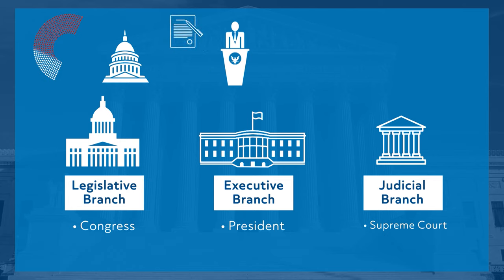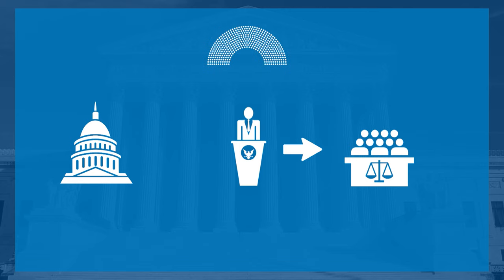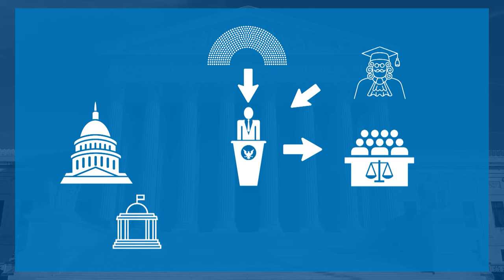Any treaty the president makes with foreign powers is subject to congressional approval. Congress does not get to pick candidates for the Supreme Court — the president does that — but they do get to approve or disapprove of those selections. The House of Representatives also has impeachment powers over federal officials, including the president, which means they can level legal charges against an elected official. The chief justice of the Supreme Court will oversee the proceedings as the Senate tries the case. If two-thirds find that person guilty, they will be removed from office.